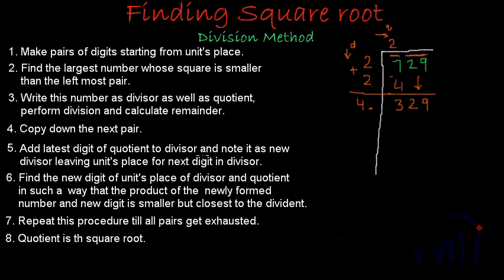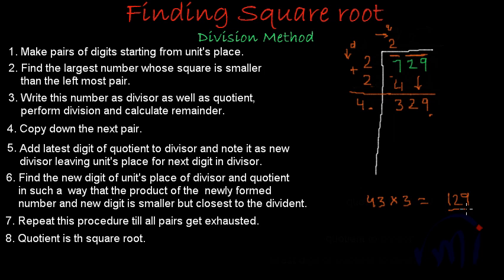Step 6 says: find the new digit for the units place of the divisor and quotient such that the product of the newly formed divisor and the digit is smaller but closest to the dividend. The dividend here is 329. Testing 3: the new divisor would be 43, and 43 times 3 is 129 — that is way less than 329, so we need to try another number.